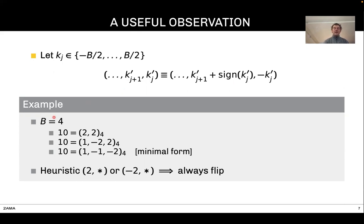Here is an example. Take B equal to 4. (2,2) is a valid decomposition for 10. But you can also flip the first digit, the least significant digit, in which case you get (-2,-1,1). Actually, we can show that that last form has a minimal Euclidean weight.